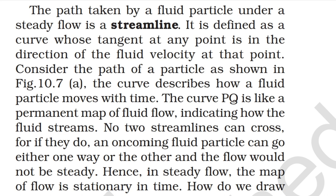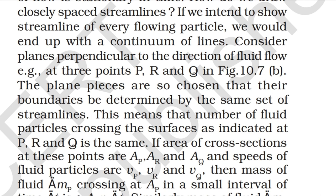The path taken by a fluid particle under steady flow is a streamline. It is defined as the curve whose tangent at any point is in the direction of the fluid velocity at that point. The curve PQ is like a permanent map of the fluid flow. No two streamlines can cross — if they did, an oncoming fluid particle could go either way and the flow would not be steady. Hence in steady flow the map of the flow is stationary in time.